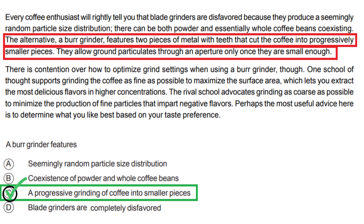Let's analyze the other options and explain why they are incorrect. Option A: Seemingly random particle size distribution. This option is incorrect because it refers to the disfavored blade grinders mentioned in the paragraph, not burr grinders. The paragraph states that blade grinders can produce both powder and essentially whole coffee beans coexisting, not burr grinders.